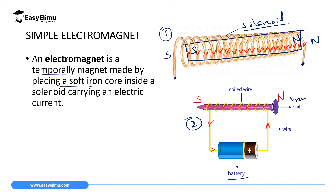An electromagnet is a temporary magnet — it is only a magnet when it is inside a solenoid carrying electric current, and it loses its magnetism when it is removed outside the solenoid.